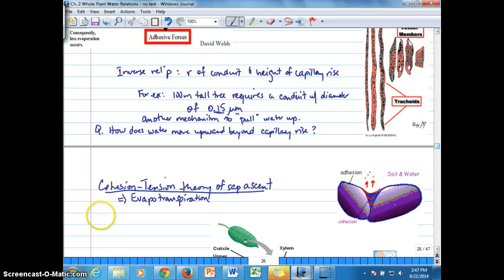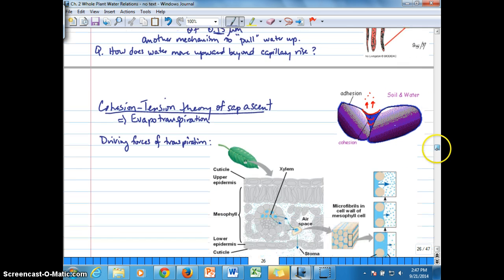We could say that there are two driving forces of transpiration. The first is evaporation from the mesophyll leaf surfaces, the leaf mesophyll cell surfaces, or the apoplasts surrounding the mesophyll cells into the surrounding leaf air spaces.